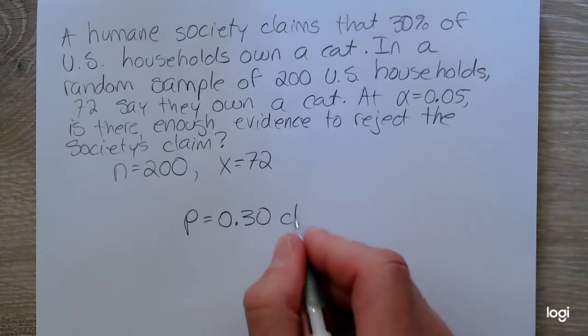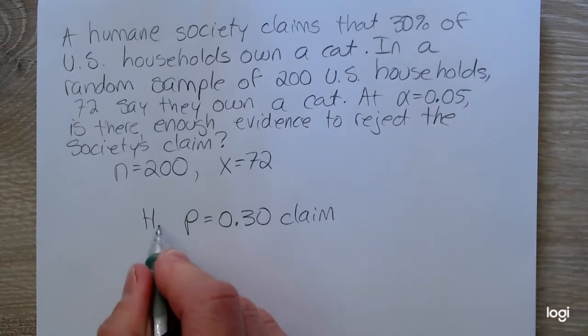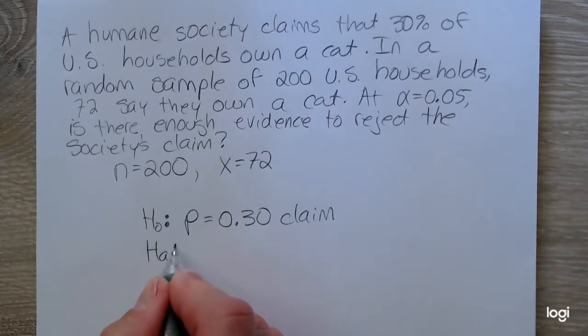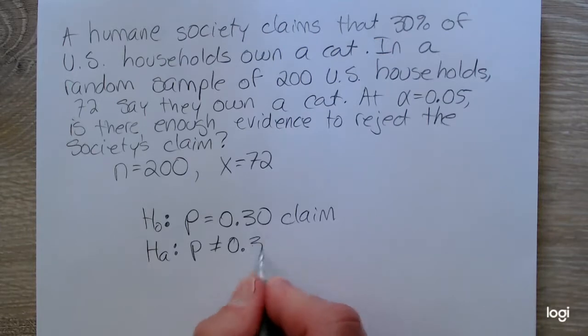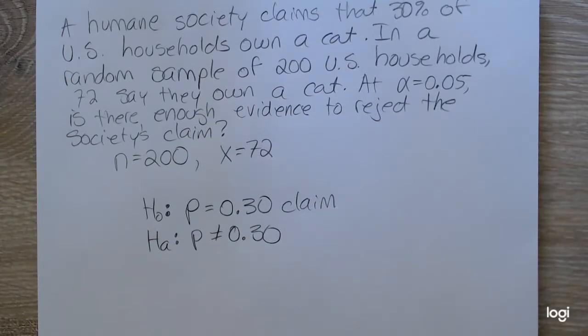Okay, so this is the humane society's claim. Because it contains the case of equality, the claim is the null hypothesis. And that makes the alternative not equals. There is no sense of direction implied or inequality applied at all in this problem.